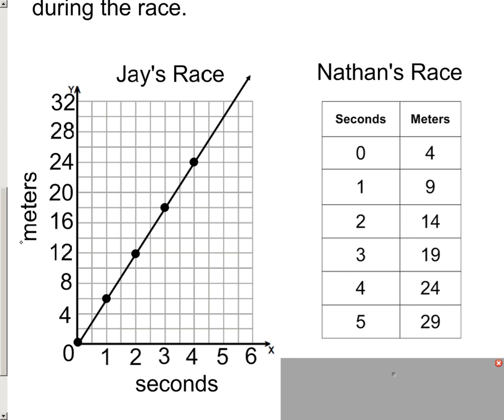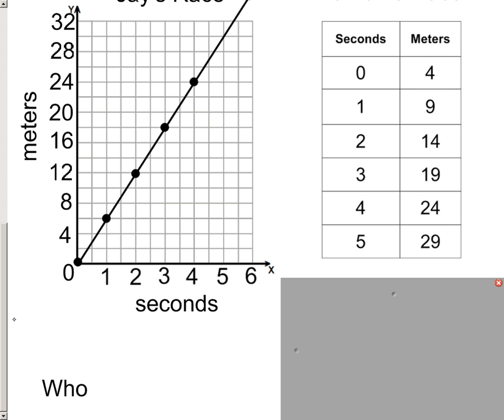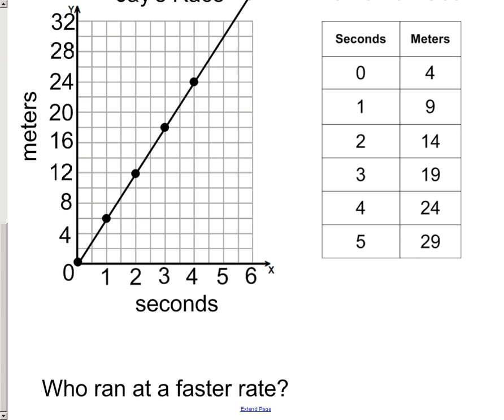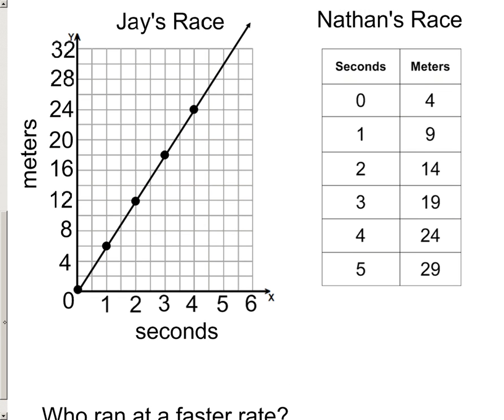And all that we want to know is the following: who ran at a faster rate? Now I'm not talking about who got done faster. We want to know who's running at a faster meters per second, who covers more meters in one second. And that basically comes down to comparing the rate of change, or the slope of each of these.